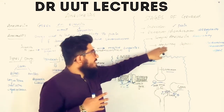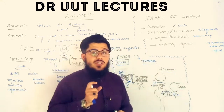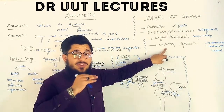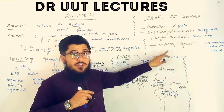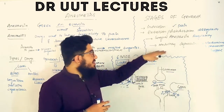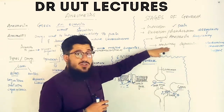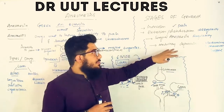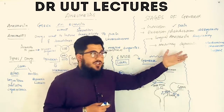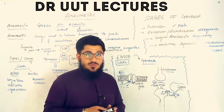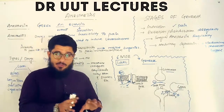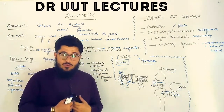Stage three is surgical anesthesia, where the surgery is performed — all body mechanisms become regular and stable. Stage four is medullary depression, a critical stage where the medulla — which houses the breathing center — becomes depressed, potentially leading to death. If anesthesia proceeds toward stage four, mechanical and pharmacological support is applied to bring the patient back to the surgical anesthesia stage.